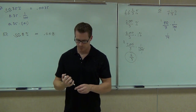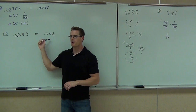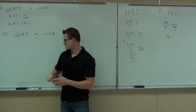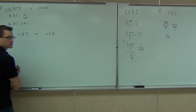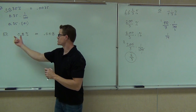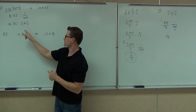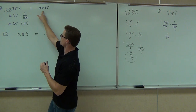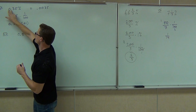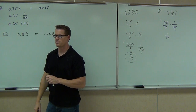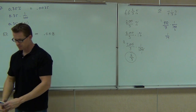Here's one way you can think of it: the decimal equivalent should look like a smaller number than what you started with. The percentage should look bigger than the decimal. 0.0035 looks smaller than 0.35, 0.19 looks smaller than 19%.